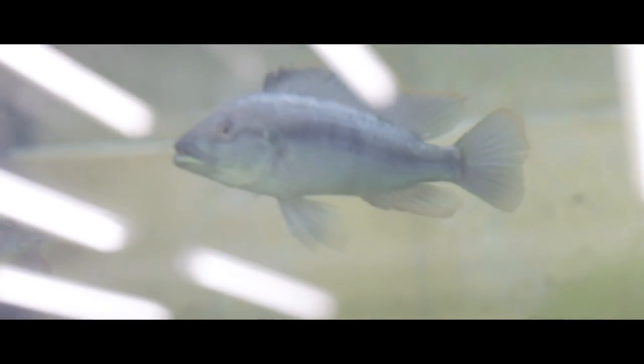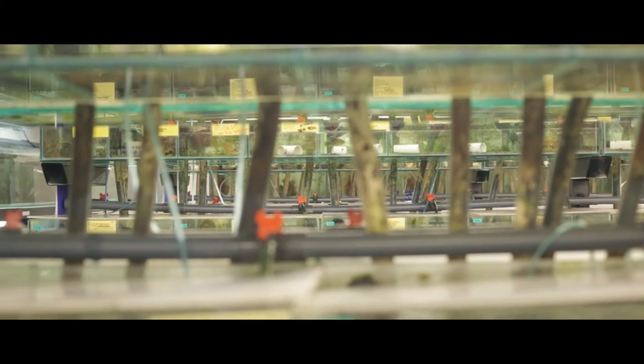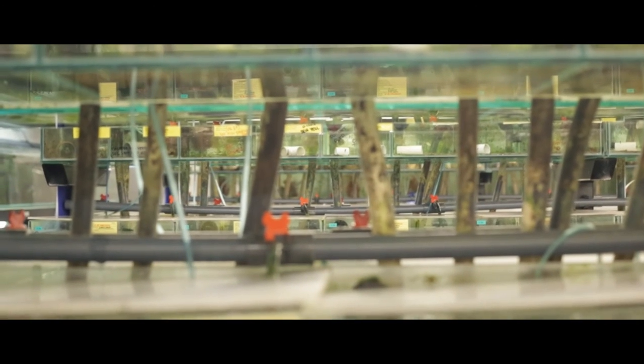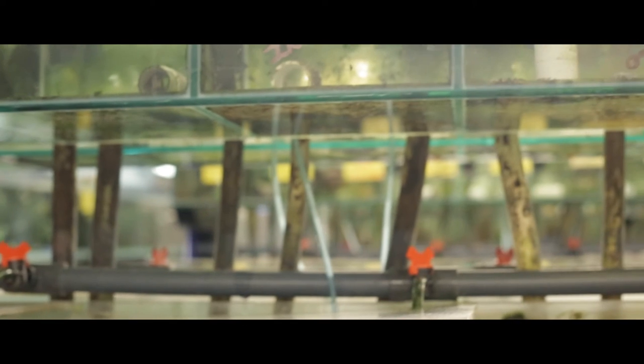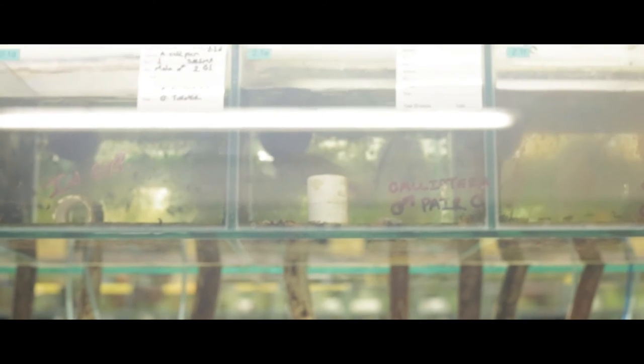But all of these fish are descended from a single ancestral form that entered the lake from the river systems around about. And evolutionary biologists are really keen to find out how this kind of thing happens, how this one species diversifies into hundreds of different species.